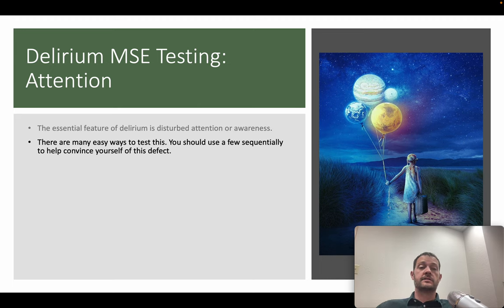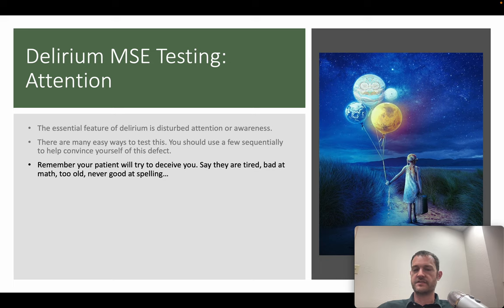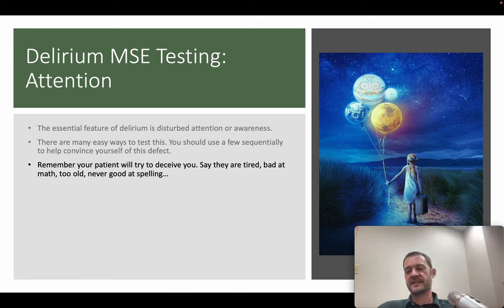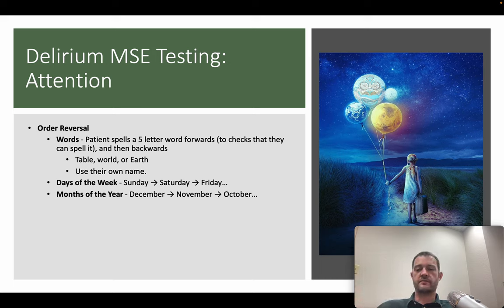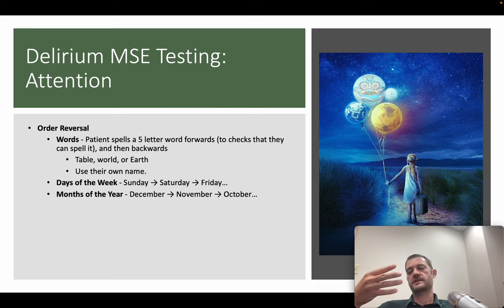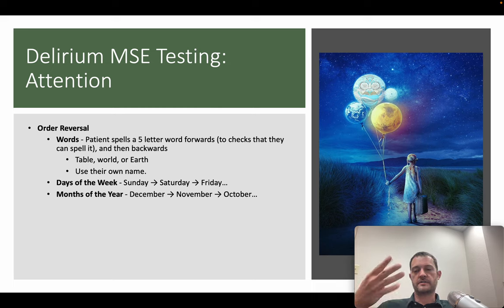There are many ways to test attention; you should do several sequentially to confirm a real deficit. Patients will try to get out of testing — claiming they're tired, bad at math, or too old — none of those are valid excuses. Push through nicely. The easiest method is order reversal: give a five-letter word like 'world,' have them spell it forward first to confirm they can spell it, then backwards: D-L-R-O-W. Common words are table, world, and earth.